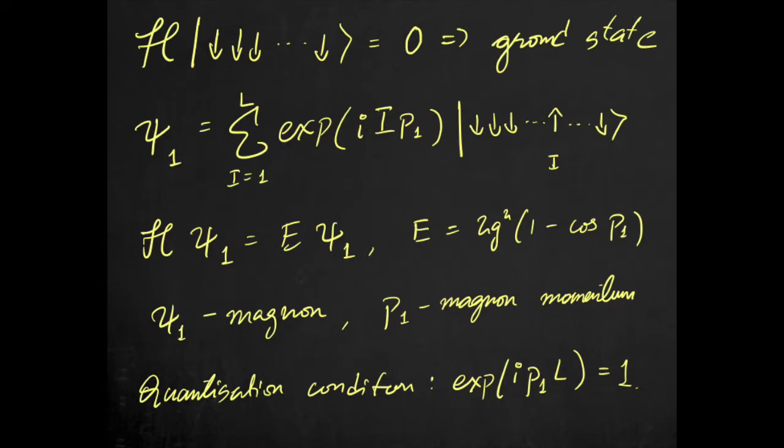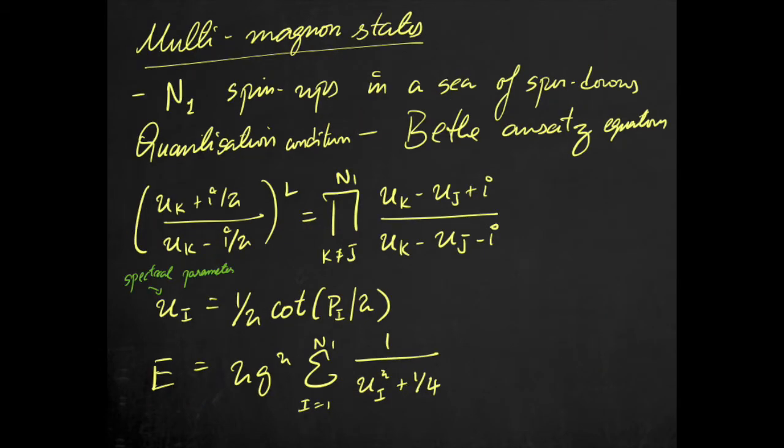Similarly, for states with multiple magnons, a similar quantization condition yields the Bethe-Ansatz equations. Here, u is called the spectral parameter and is related to the magnon momenta. And the solutions of the Bethe-Ansatz equation, the Bethe roots, give us the magnon momenta. The energy can be obtained from the Bethe roots using this simple formula.